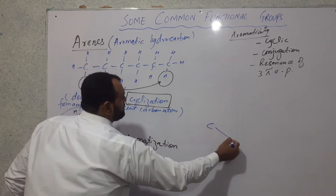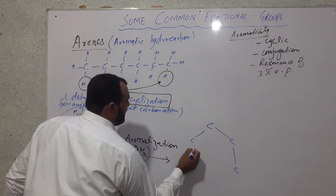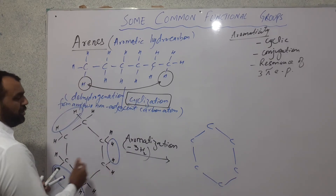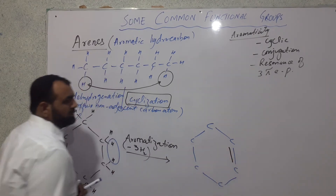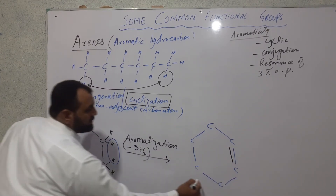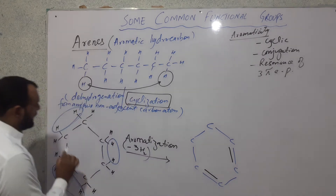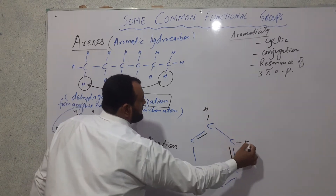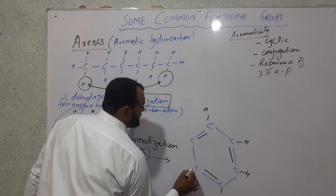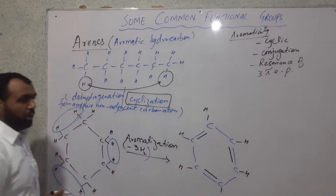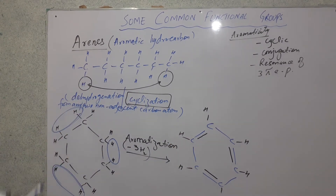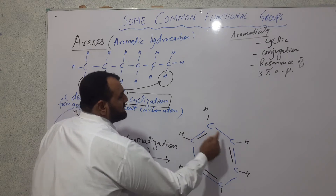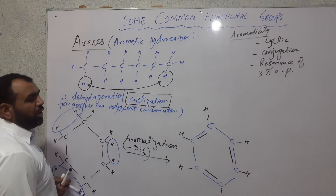The resulting structure is a six-membered cyclic structure. A double bond appears at each position where hydrogen was removed. After removing hydrogen at three positions, each remaining carbon has one hydrogen attached — all six carbons have one hydrogen each. This compound is again cyclic but now has three alternate single and double bonds.